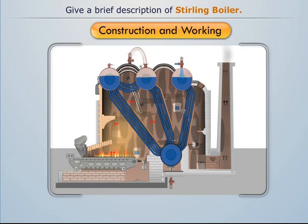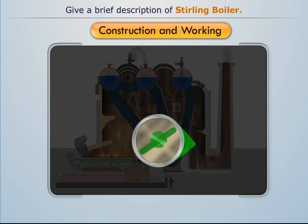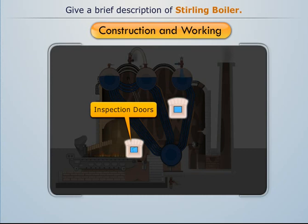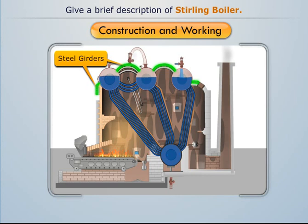Ash produced by the burning of fuel is collected in the ash pit, while smoke is allowed to escape into the atmosphere through a chimney. A damper is installed before the chimney to regulate the air supply into the firebox. Inspection doors are provided in the boiler to inspect its operation on a regular basis. The boiler assembly is suspended on steel girders to enable the boiler drum and water tubes to expand and contract during operation.